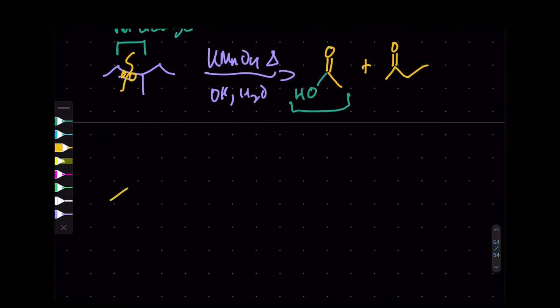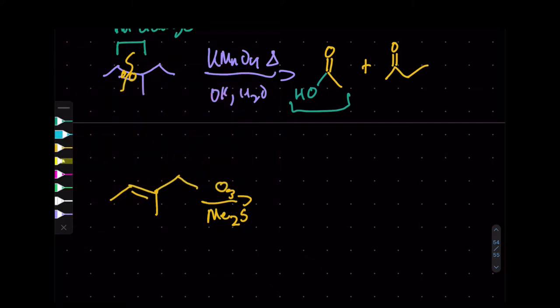A very similar reaction is done with ozone and dimethyl sulfide. This also cleaves the double bond and adds oxygens; however, it just leaves the aldehyde or ketone as is, without further oxidizing to carboxylic acid. Those are all the reactions for alkenes.